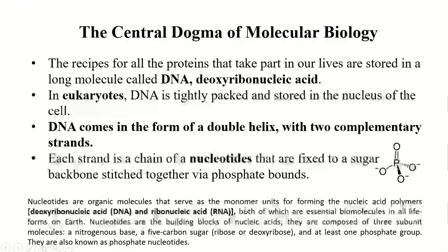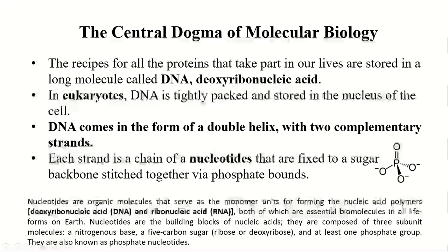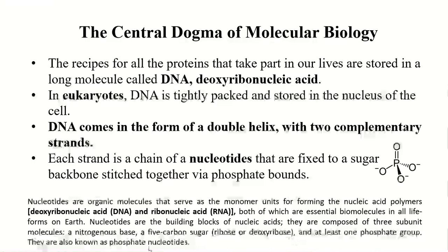Nucleotides are organic molecules that serve as the monomer units, just as amino acids are the monomers for proteins. In DNA, nucleotides are forming nucleic acid polymers, which are essential biomolecules in all life forms on Earth. Nucleotides are the building blocks of nucleic acids. The nucleic acid building blocks are composed of three subunit molecules: a nitrogenous base, a five-carbon sugar, and at least one phosphate group. They are also known as phosphate nucleotides.